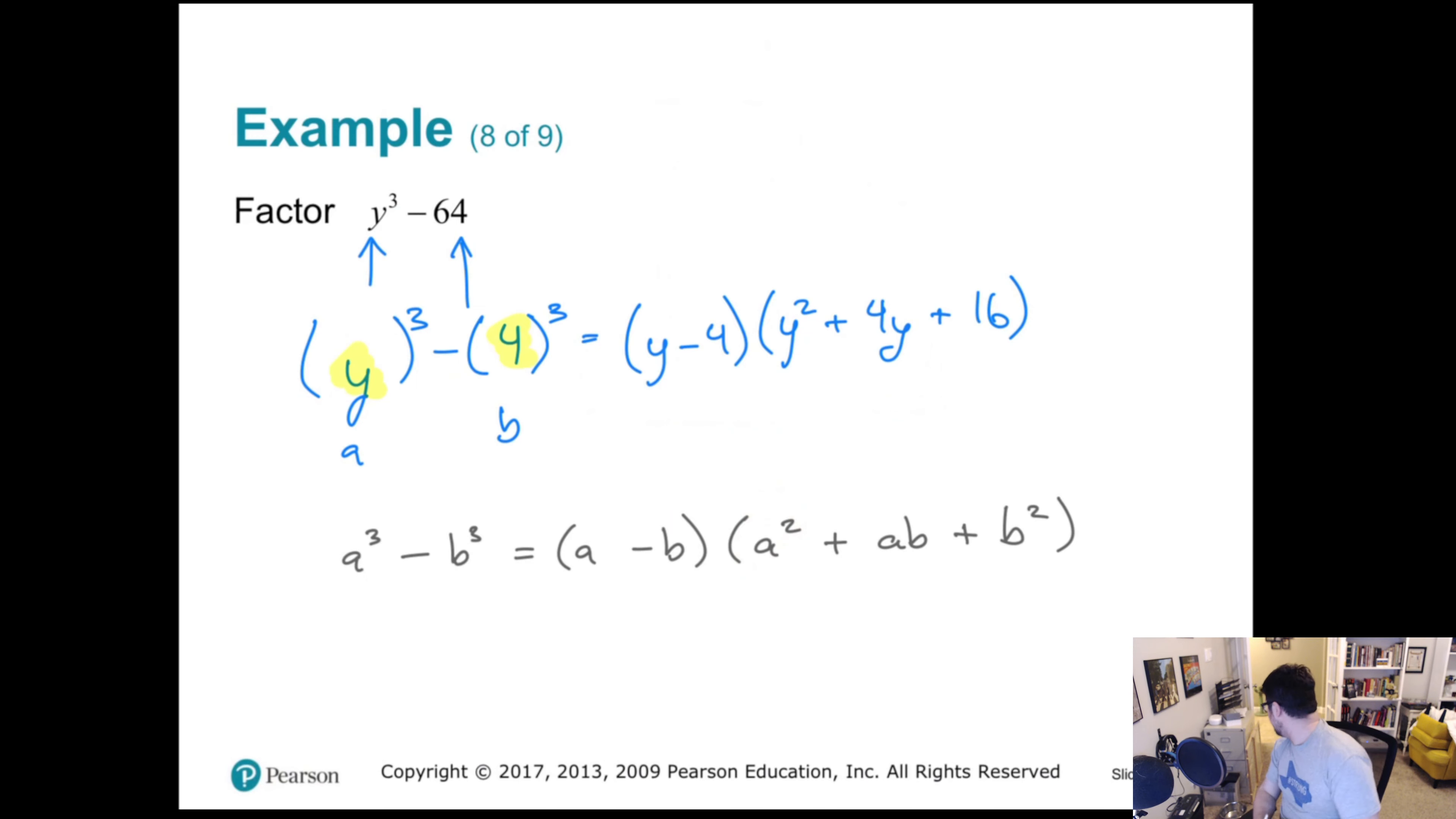You might hear a jingle ball. Let's see if the cat makes an appearance. Nope, he's just repeatedly hitting it against the wall. All right. Let's go on then. Hopefully that makes some sense as far as how we got all these things. So again, just to kind of double clarify, this is coming from our a, being y, squared. This is coming from a times b, so 4 times y. This is coming from our b, being 4, squared. Look, there's a cat. Hey, cat.